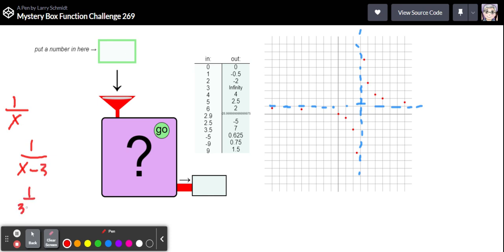So if I put in a positive three, one over three minus three would be one over zero and that would blow up and give us that asymptote. So it looks like we've got x minus three on the bottom.